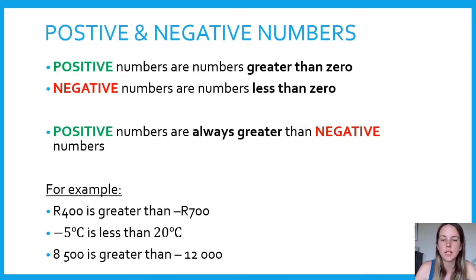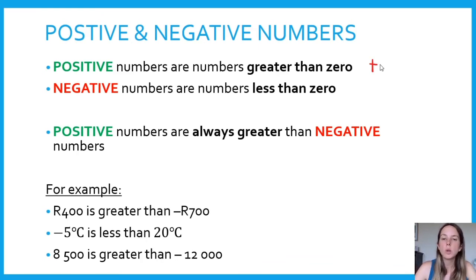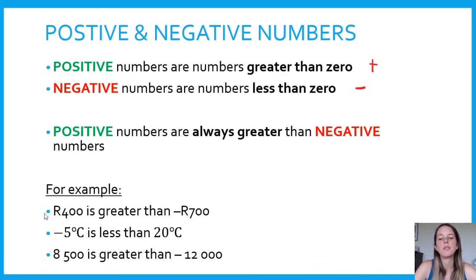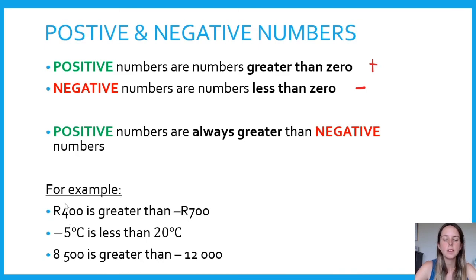Our last sub-topic for today is positive and negative numbers. Positive numbers are numbers greater than zero. You can indicate a positive number with a plus; however, we always assume a number without a symbol in front is positive. A negative number must be indicated with a minus — negative numbers are less than zero. Always remember: positive numbers are always greater than negative numbers. For example, 400 000 is greater than negative 700 000 — in a scenario like this, the 400 000 is what you have, and the negative 700 000 is what you owe, so it's a loss.